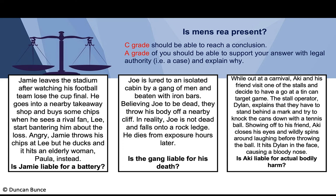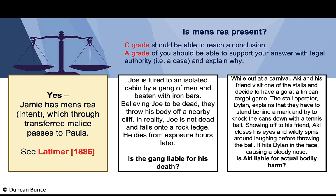Scenario four: Jamie leaves a stadium after watching his football team lose the cup final. In a takeaway shop he sees rival fan Lee, who starts bantering him. Jamie throws his chips at Lee, but Lee ducks and the chips hit an elderly woman, Paula, instead. Is Jamie liable for battery? When he throws the chips there is a clear intent to hit Lee. As they pass to Paula, an unintended victim, this is a clear case of transferred malice. The mens rea transfers to Paula, and we cite Latimer.